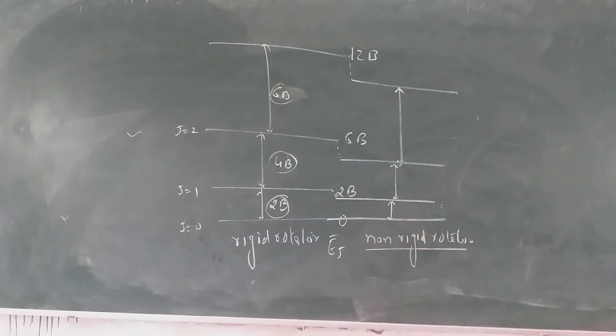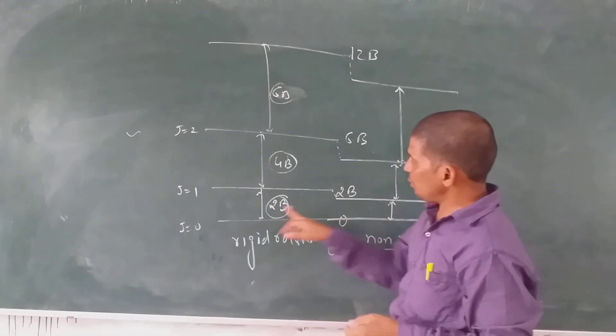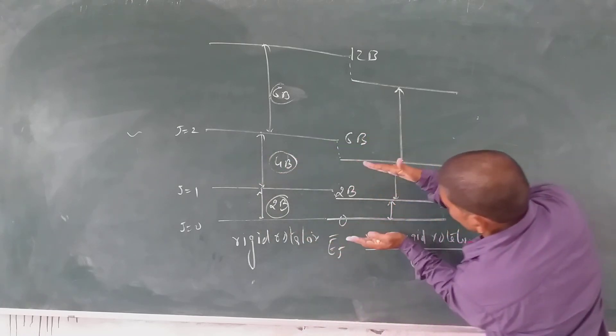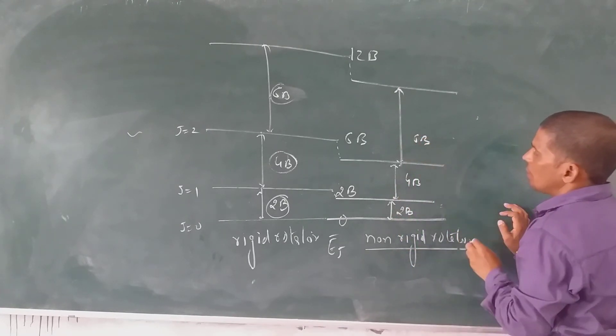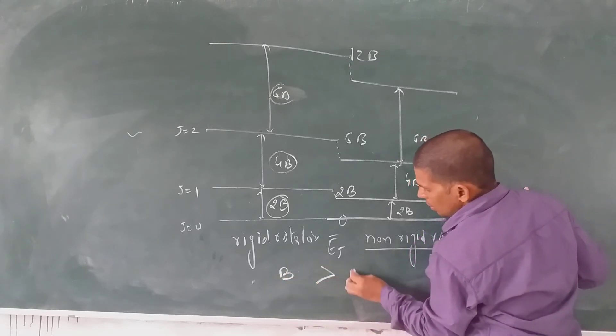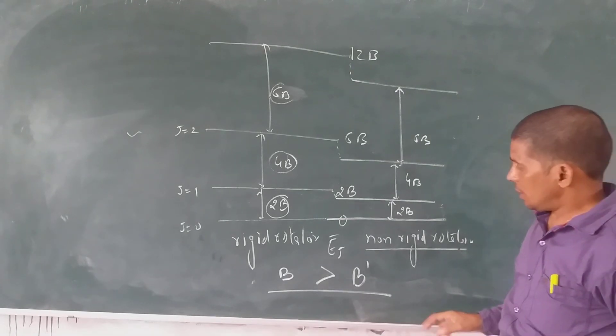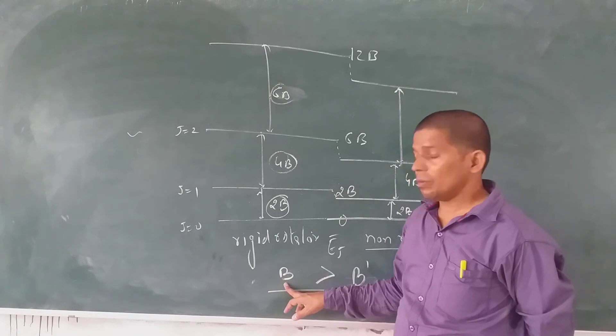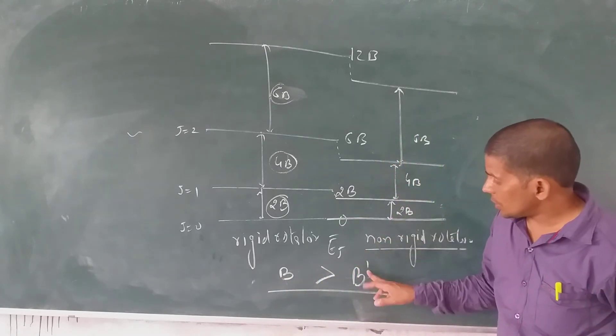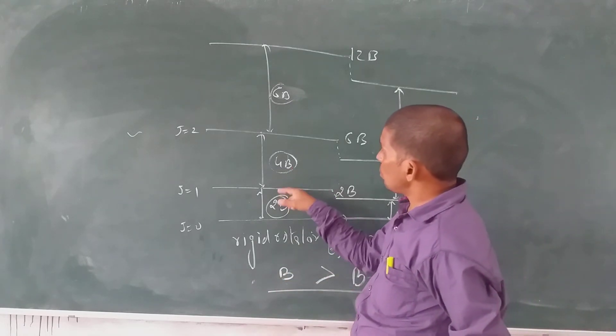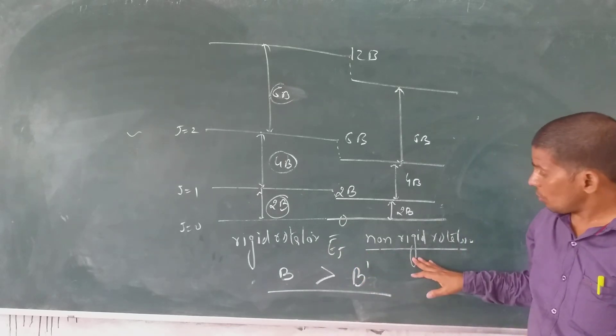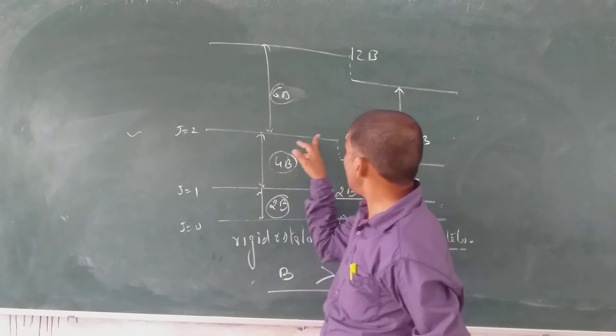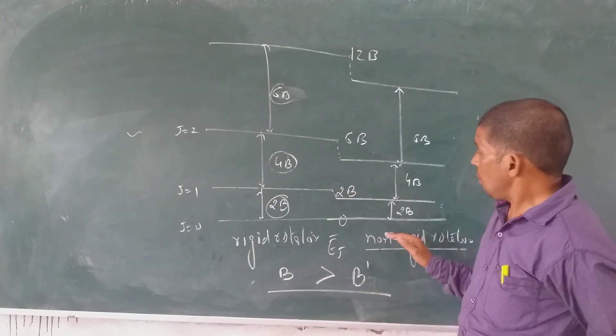The energy levels for non-rigid rotator: 2B, 4B, 6B and so on. But the rigid component B is greater than non-rigid. You can see that rigid rotator's constant is more than non-rigid rotator's constant.